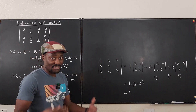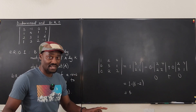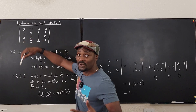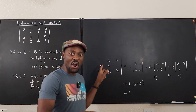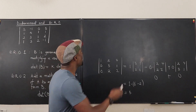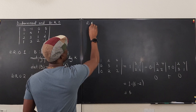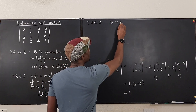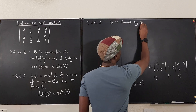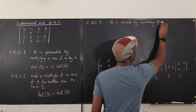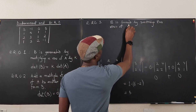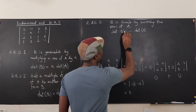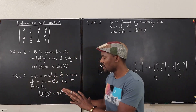Elementary row operation 3: whenever you switch two rows, the sign of the determinant changes. Remember that cofactor signs alternate as plus, minus, plus, minus. So switching rows affects the determinant. If B is formed by switching two rows of A, then det(B) equals negative det(A). These are the three elementary row operations and their consequences for the determinant.